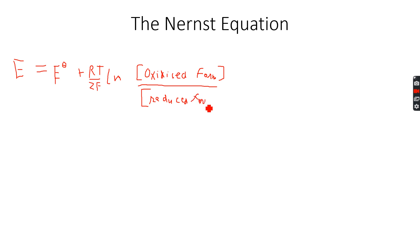If the reduced form is a metal or is a solid, it will be taken as one. So it will just be RT over ZF ln oxidized.